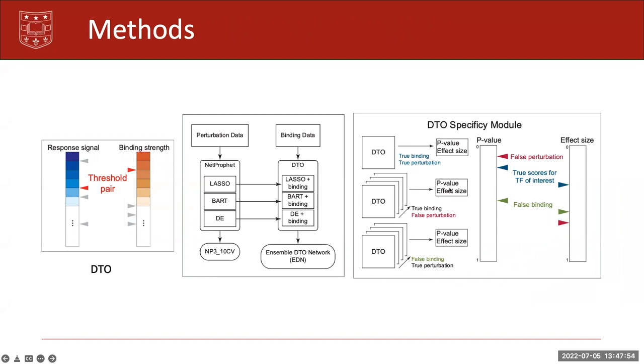And while we merge the network here, in case TFs overlap between individual components of DTO output, we pick the TFs that have low percentage of false pairings that perform better than the true pairing. And that's how we get the Ensemble DTO Network.